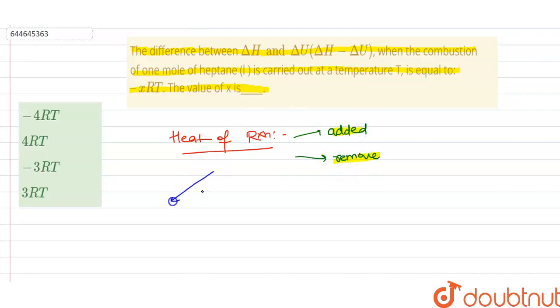And it is of two types. First is delta H, which is called the enthalpy of reaction at constant pressure, and the other is delta U, which is called the enthalpy of reaction at constant volume.